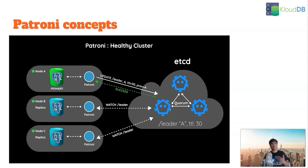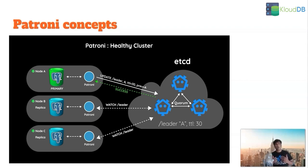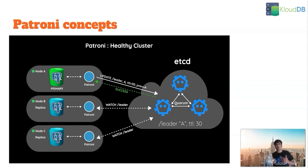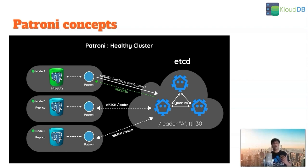Node A is the primary and Patroni runs on all three of the Postgres nodes. Patroni relies heavily on DCS like etcd, Zookeeper, or HashiCorp Consul. In this case we are using etcd. etcd is nothing but a key-value store. There are several keys stored and one of them is the leader key, which points to the primary.